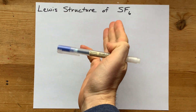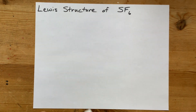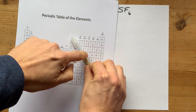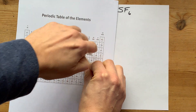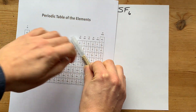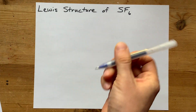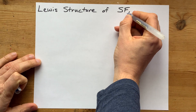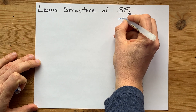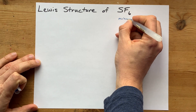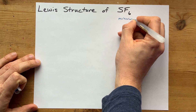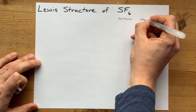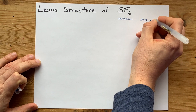We're going to draw the Lewis structure of SF6. Sulfur and fluorine are both above and to the right of the staircase on the periodic table, which means they're both non-metals. That means when they combine, they're going to make a molecular compound, and that means they're going to share electrons.